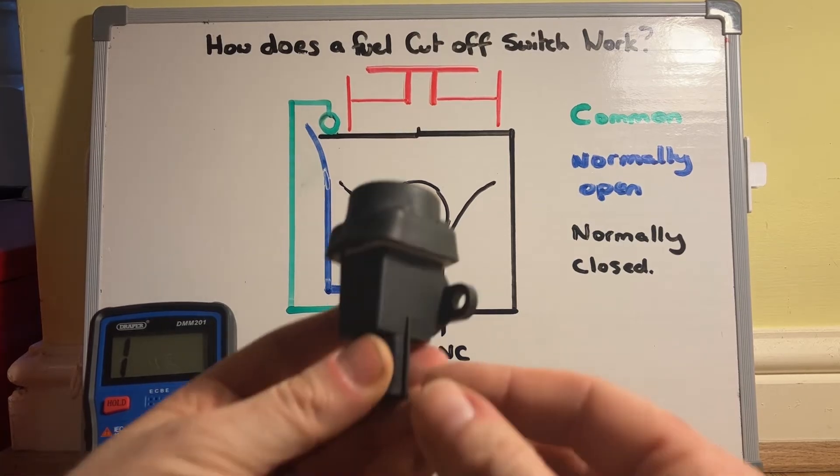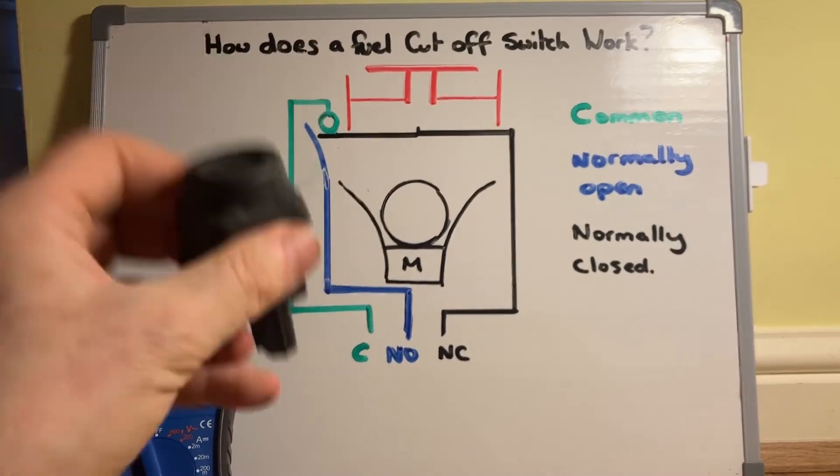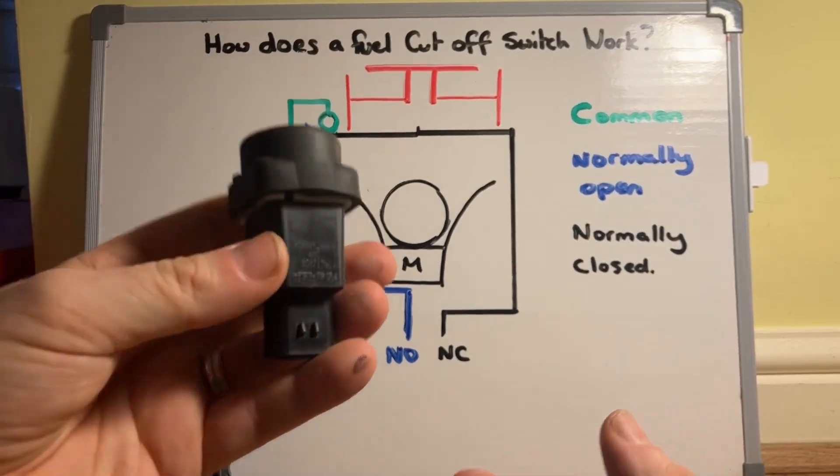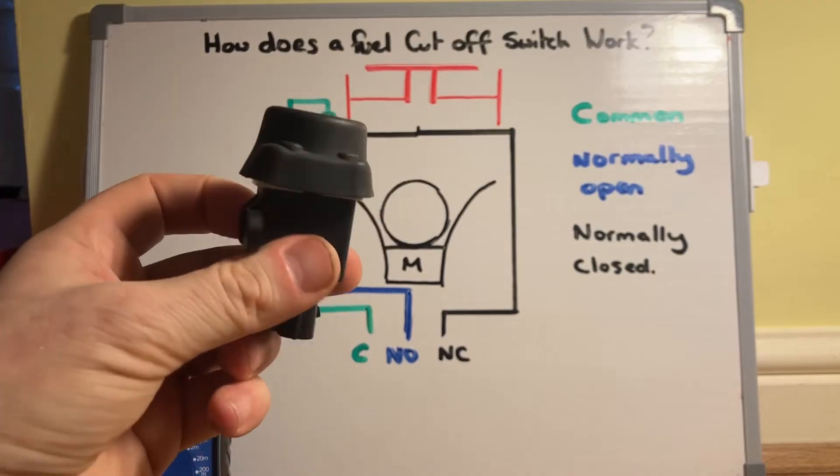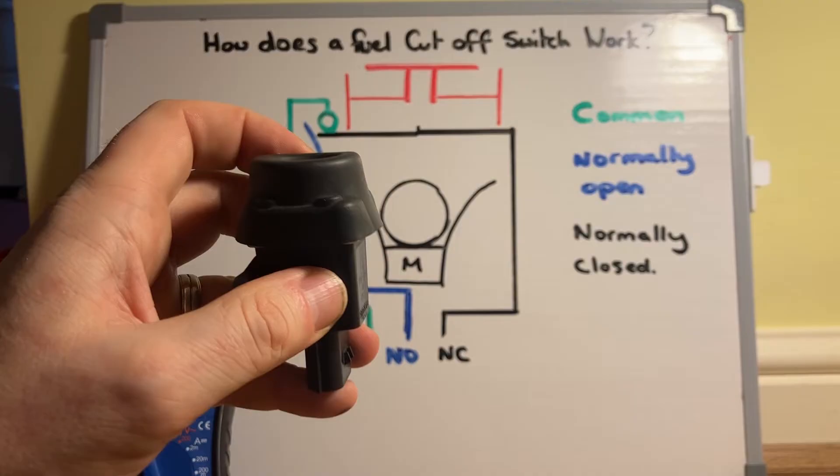So obviously they're quite robust, they don't tend to fail. But obviously if the ball becomes dislodged that will cut off the fuel supply. Even the ball sitting back in the magnet doesn't restart the fuel pump, so what you've got to do is push the button on top and then it'll reset.